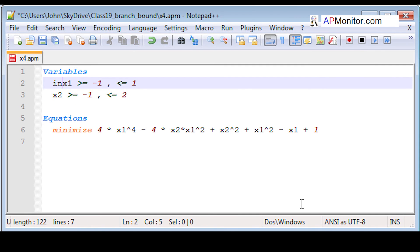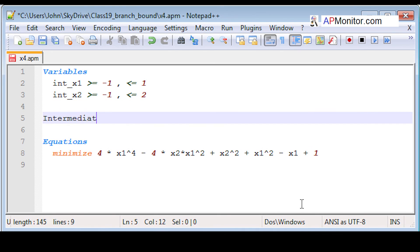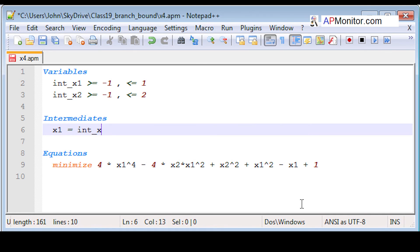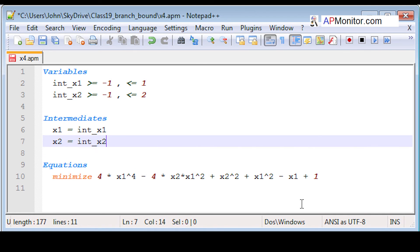I just add the int in front of the variable names. I'm going to have an intermediate so I don't have to redefine all those. Just redefine these variables as x1 and x2, but those are still going to be integer values.